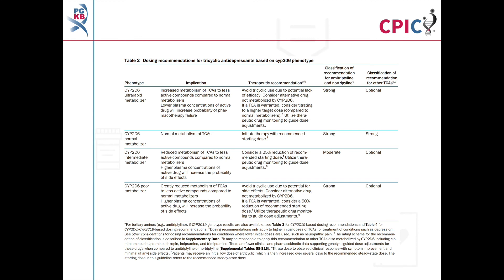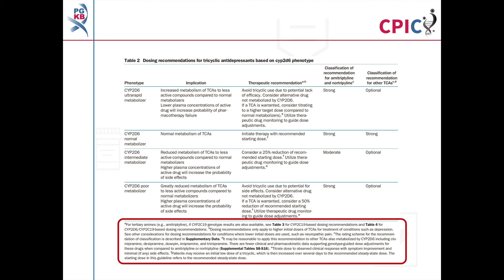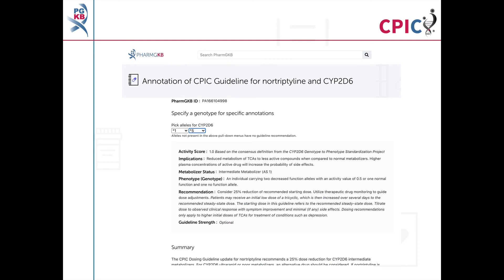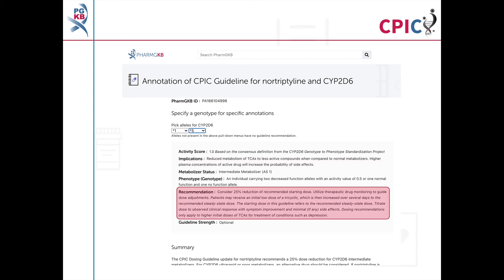The dosing recommendations for nortriptyline can be found in Table 2 of the guideline. Detailed footnotes pertaining to the recommendations can be found at the bottom of the table. This guideline has been annotated on the PharmGKB website, which includes a drop-down menu where an activity summary can be given for specific combinations of alleles. The activity summary includes implications for the patient's response to nortriptyline, the appropriate dosing recommendation for the specific genotype, and the strength of that recommendation.